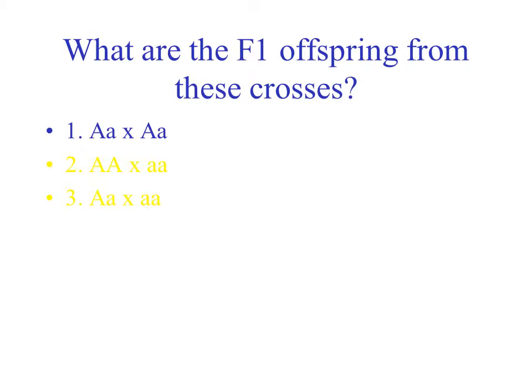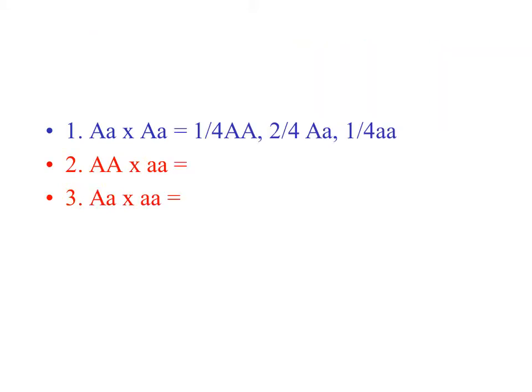What are the F1 offspring from these crosses? I will provide the answer for the first one. When you cross two heterozygote individuals you will get one-fourth big A big A, two-fourths big A little a, and one-fourth little a little a. You should be able to do questions two and three on your own.